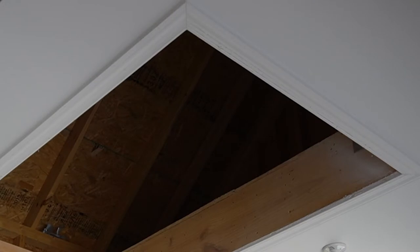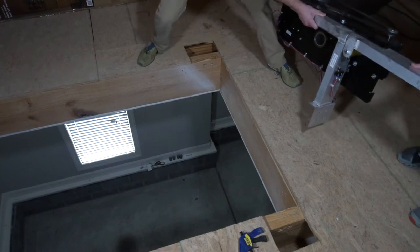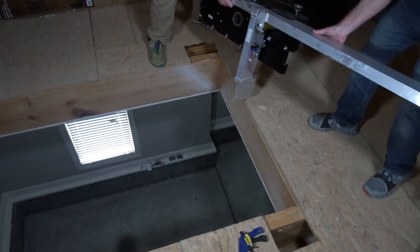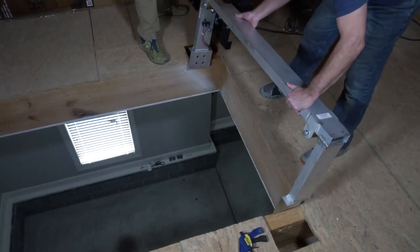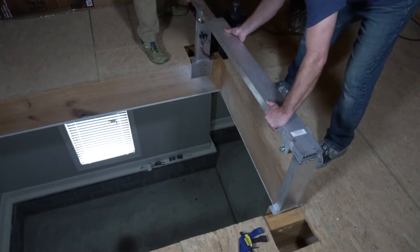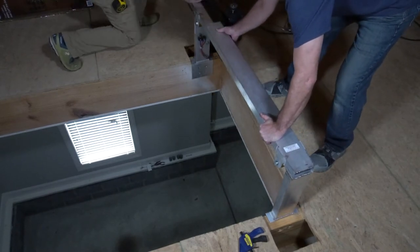Trim out the opening with your choice of molding. Install the molding flush with the edge of the sheetrock so that it does not interfere with the lift's operation. Carry or hoist the motor drive assembly into the attic and place the feet directly on top of the joists. Do not mount to the top of the attic flooring.